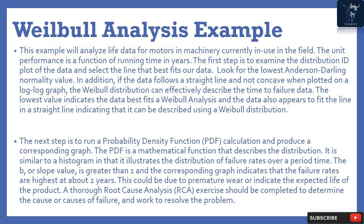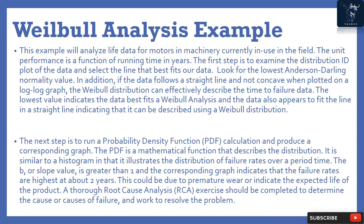This example analyzes life data for motors in machinery currently in use in the field. The unit performance is a function of running time in years. The first step is to examine the distribution ID plot of the data and select the line that best fits. Look for the lowest Anderson-Darling normality value. If the data follows a straight line on a log-log graph, the Weibull distribution can effectively describe the time-to-failure data, indicating the data best fits a Weibull distribution.